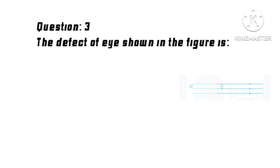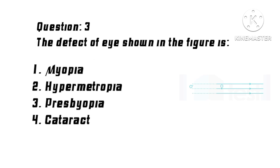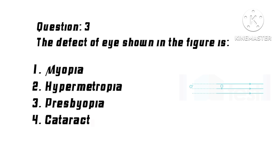Question 3: The defect of the eye shown in the figure is? Options: 1. Myopia, 2. Hypermetropia, 3. Presbyopia, 4. Cataract. Correct answer: 1. Myopia.